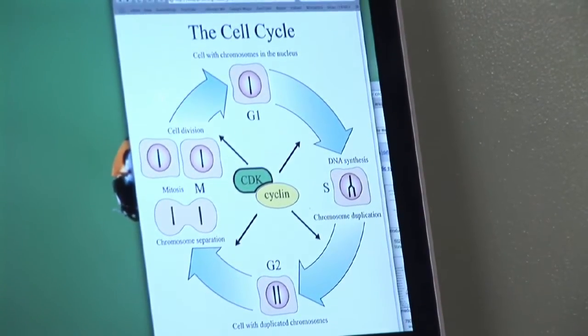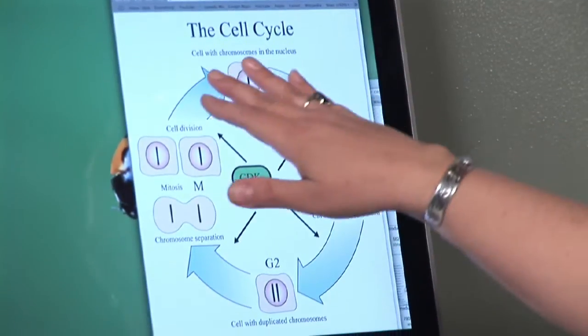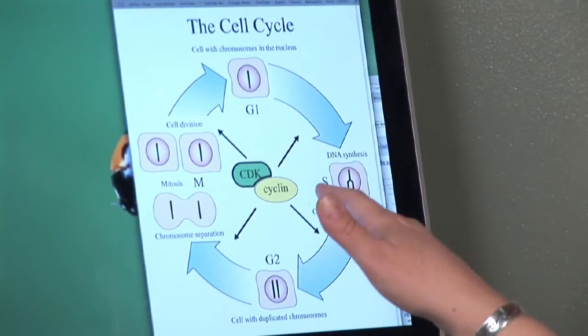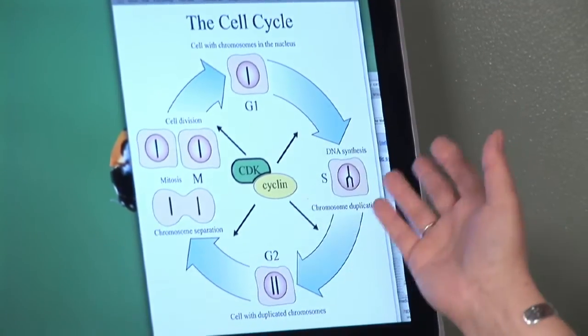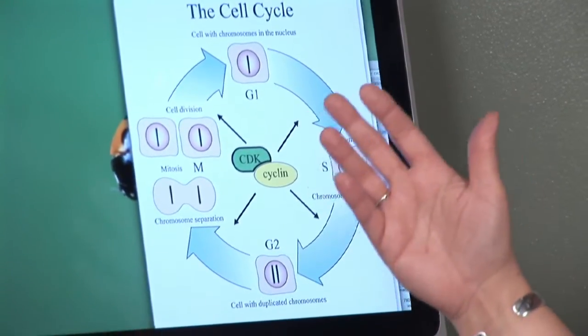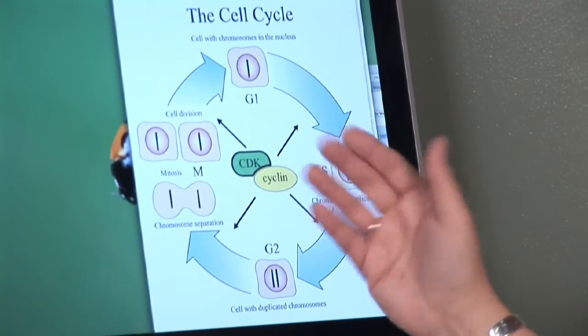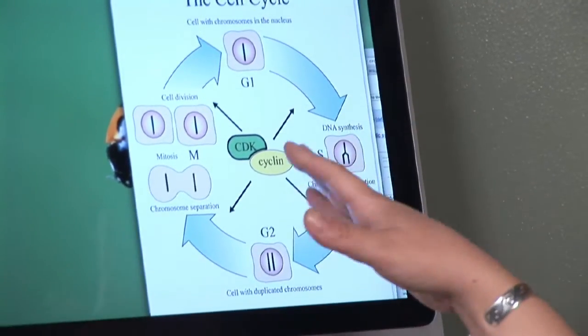It all starts with something that's called interphase. Interphase is the resting part of the cell cycle. During interphase, the cell is rebuilding itself, multiplying the DNA so that there's enough DNA for the cell to split in half and form two new cells. It also does some repair.